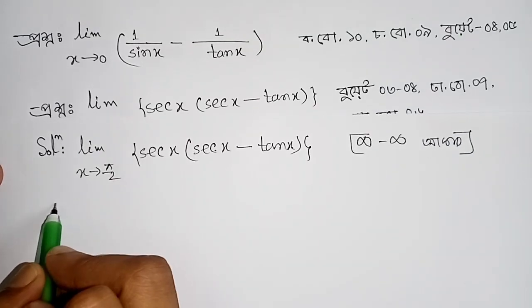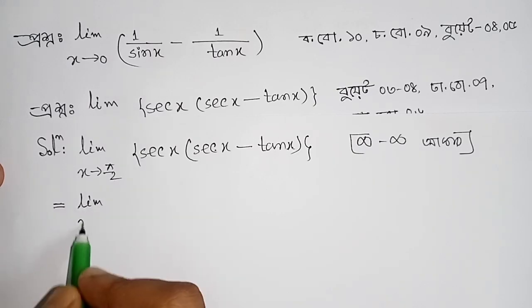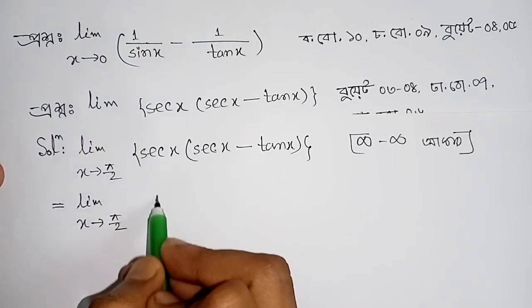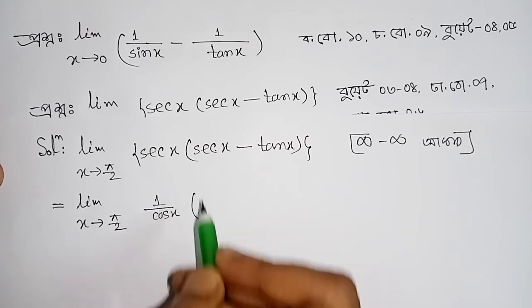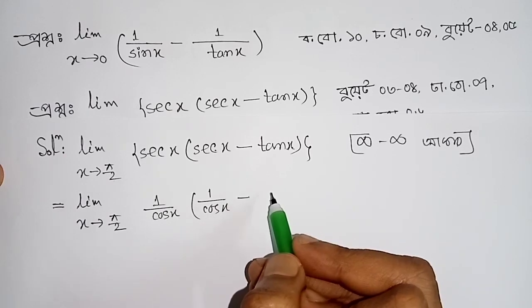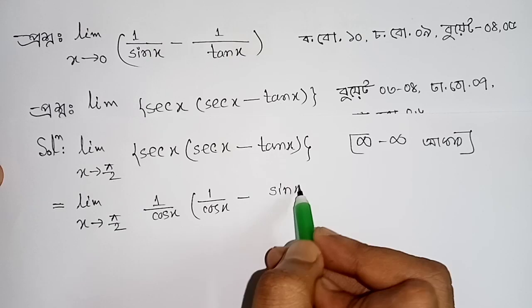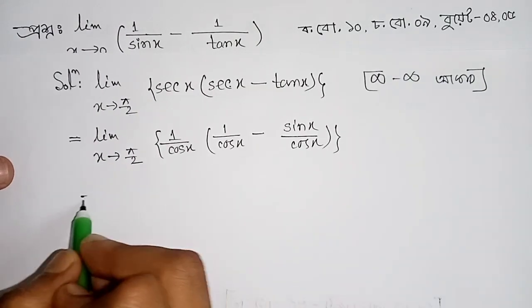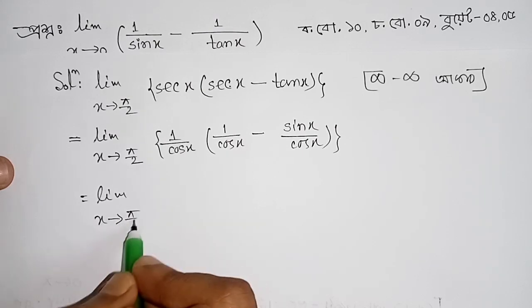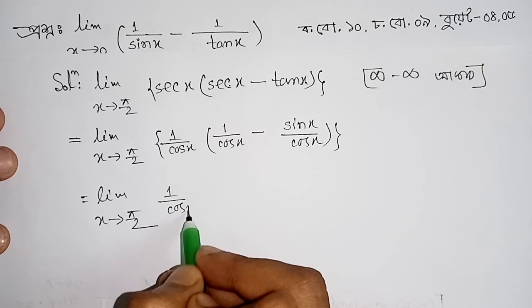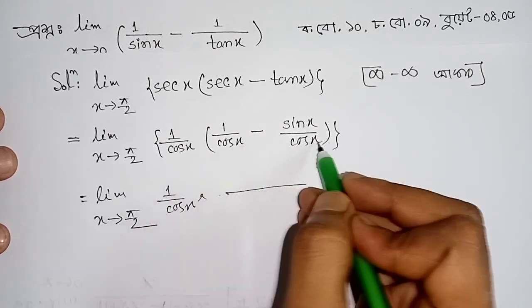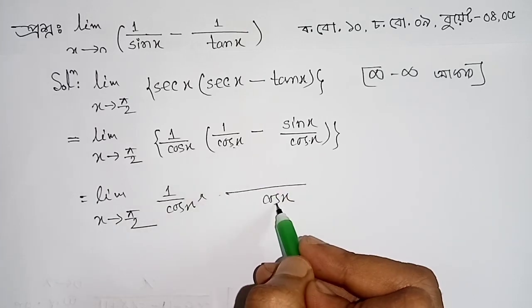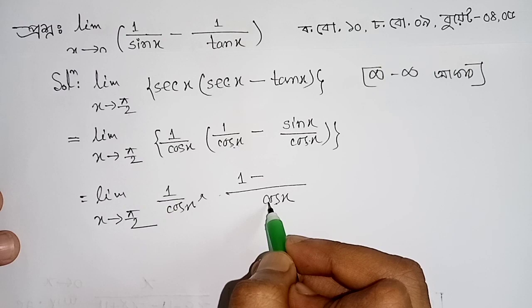We rewrite secx as 1/cosx and tanx as sinx/cosx. So the expression becomes limit x→π/2 of (1/cosx) · [(1/cosx) minus (sinx/cosx)], which simplifies to (1 minus sinx) divided by cos²x.